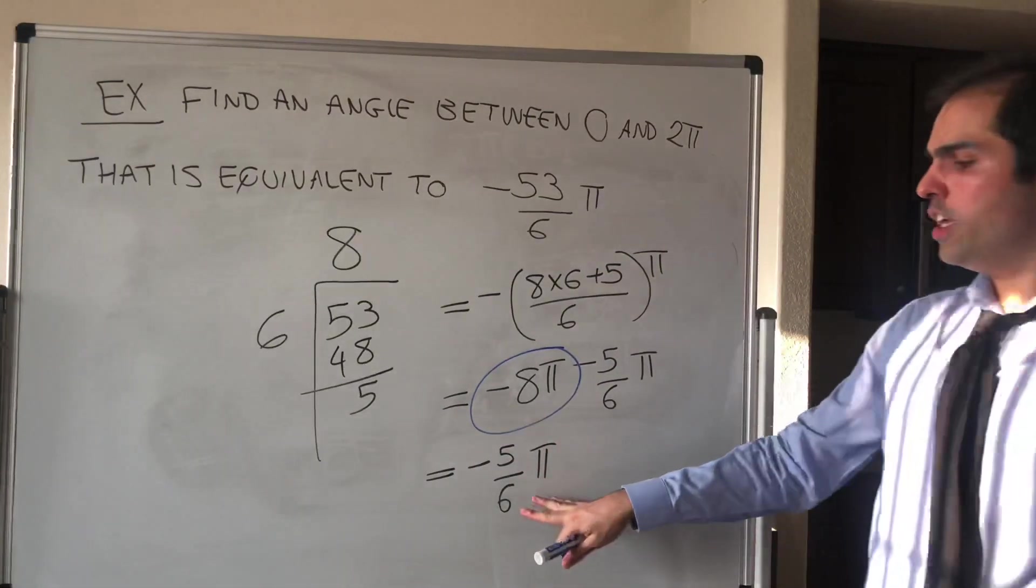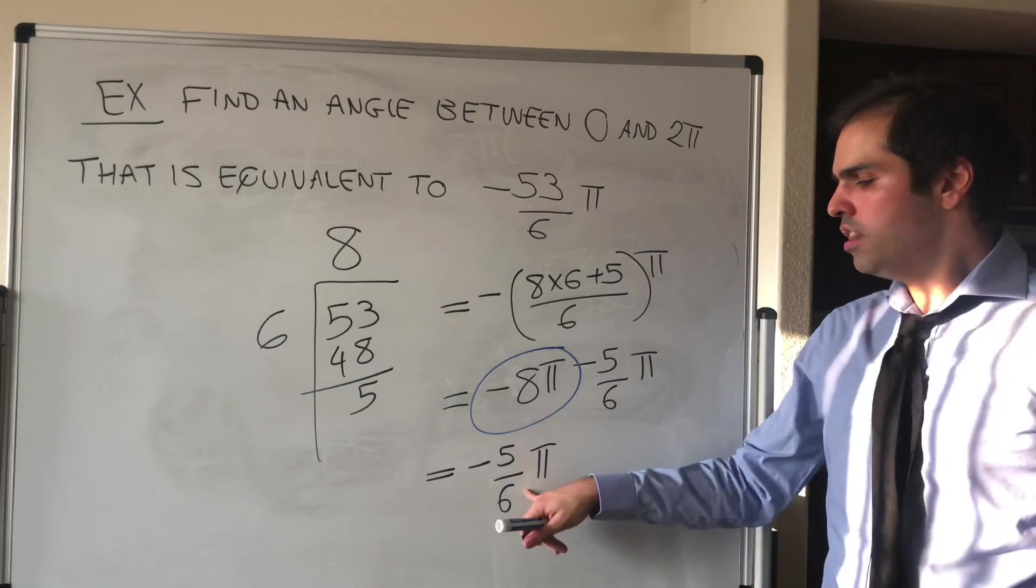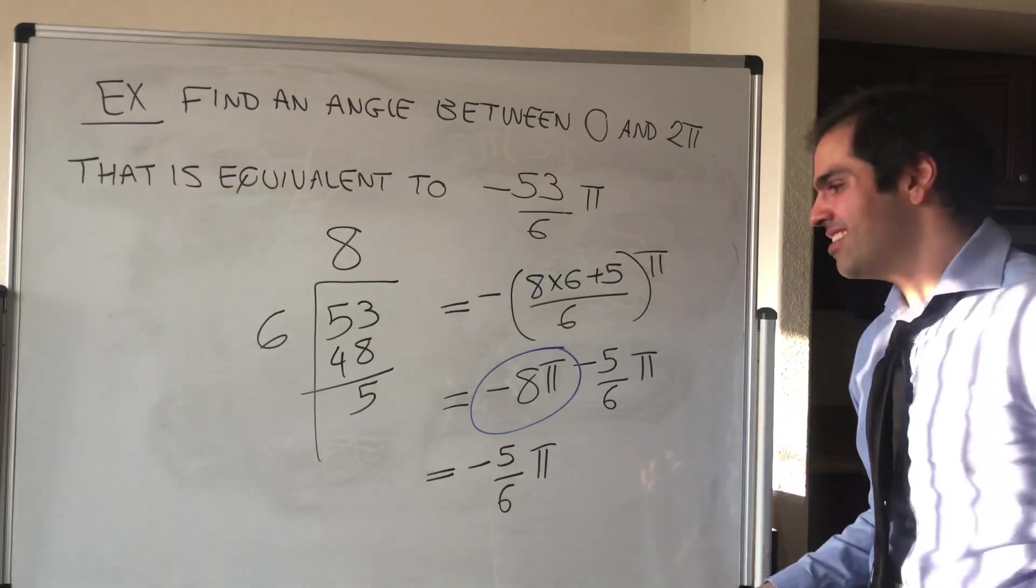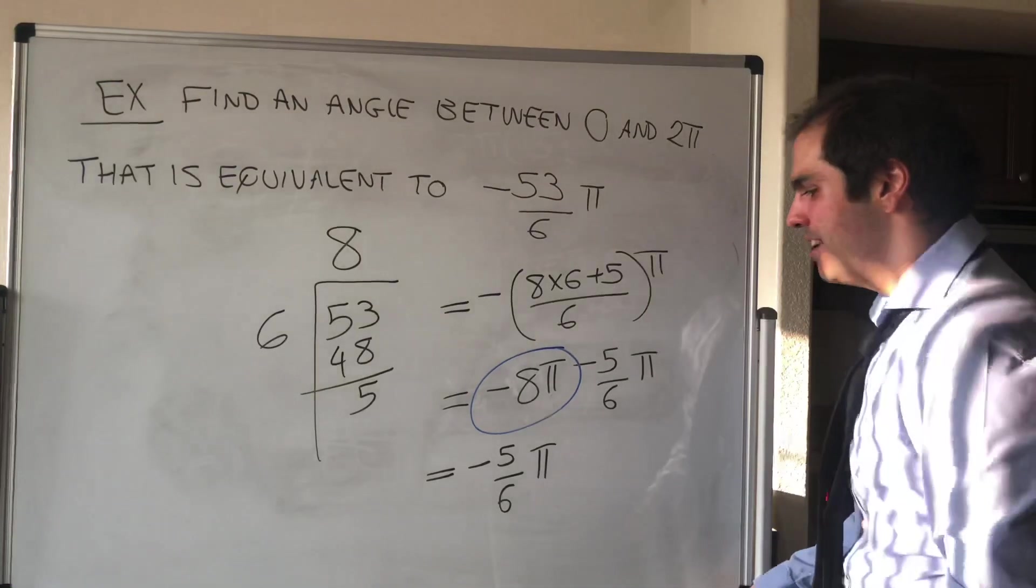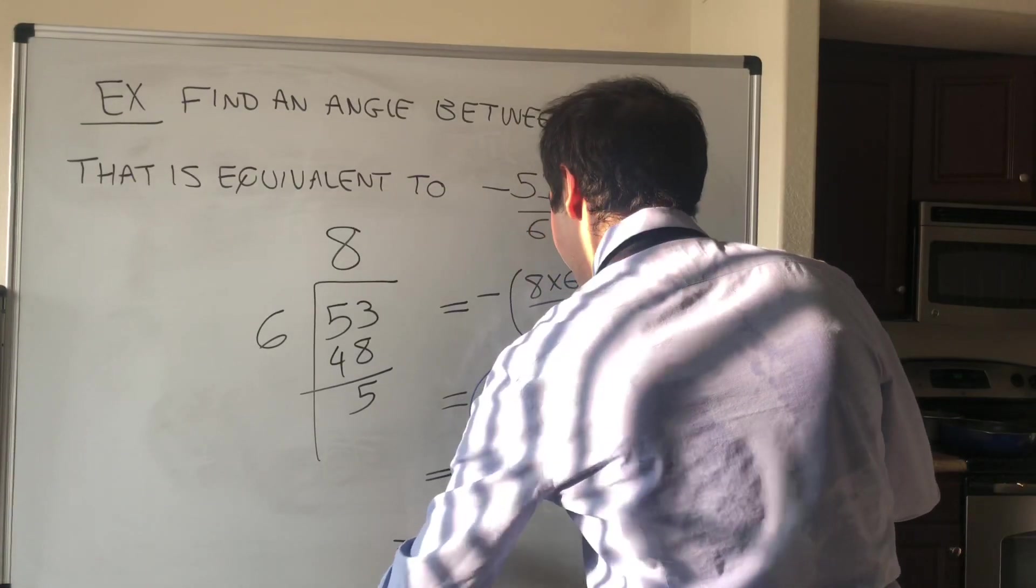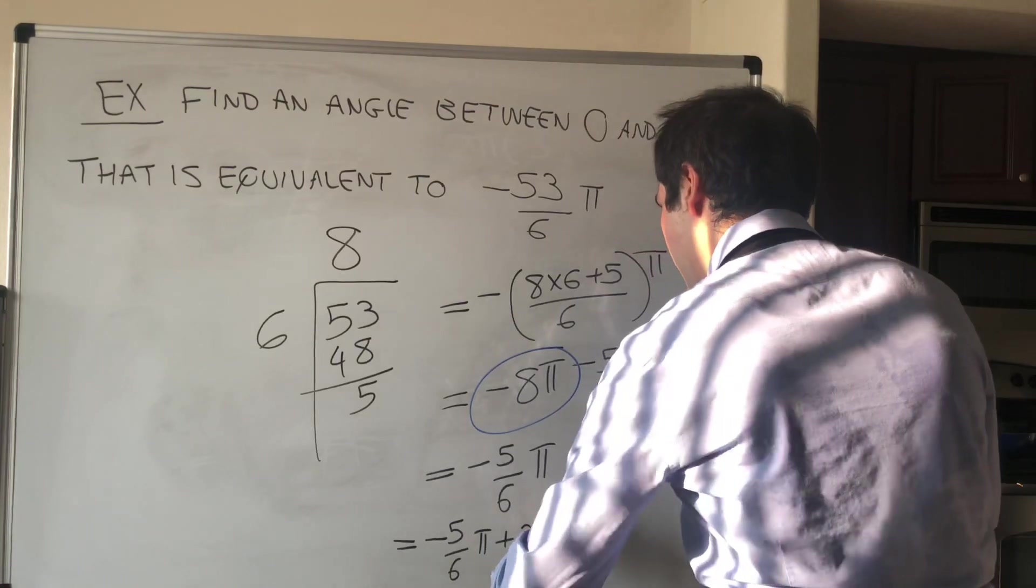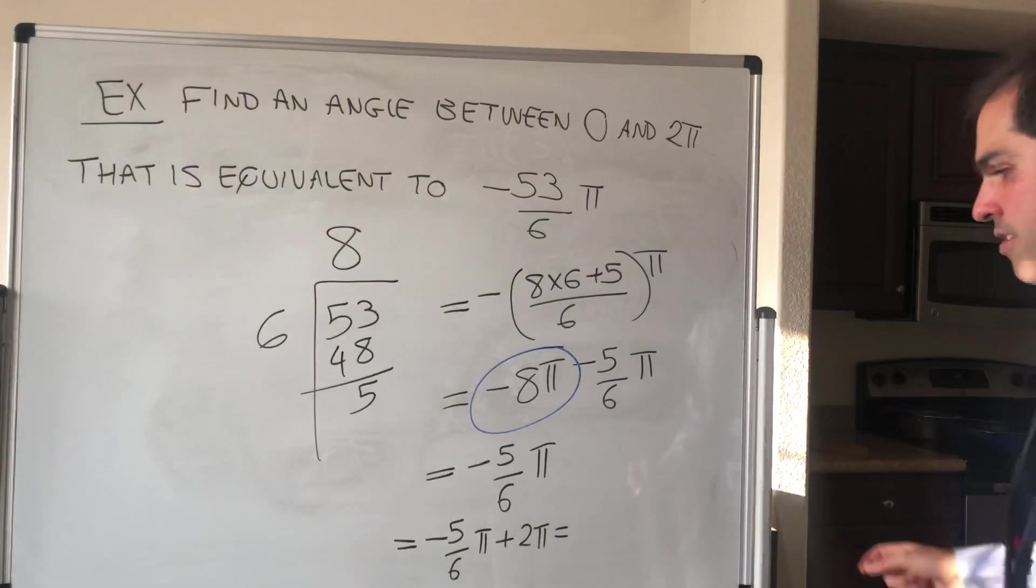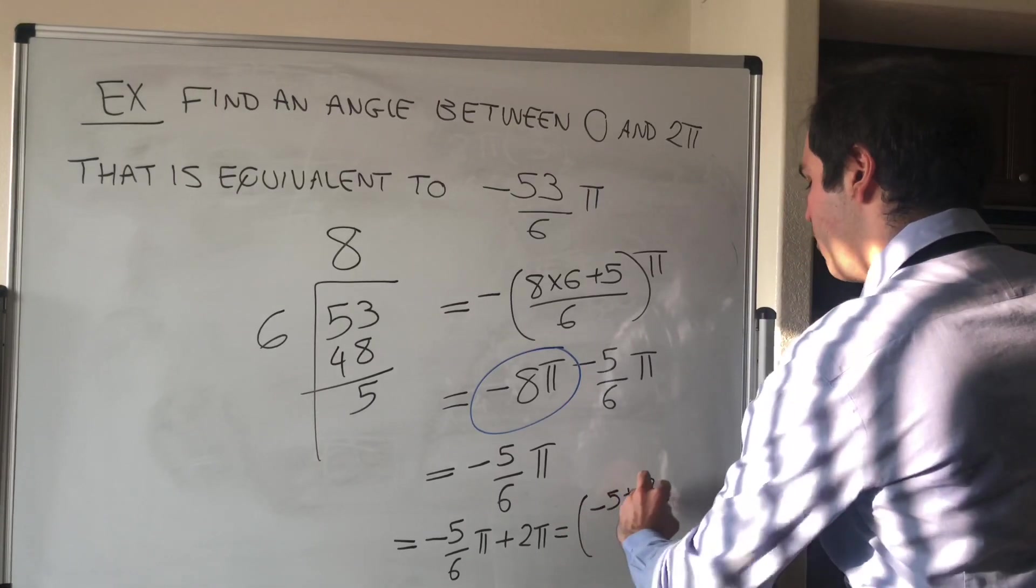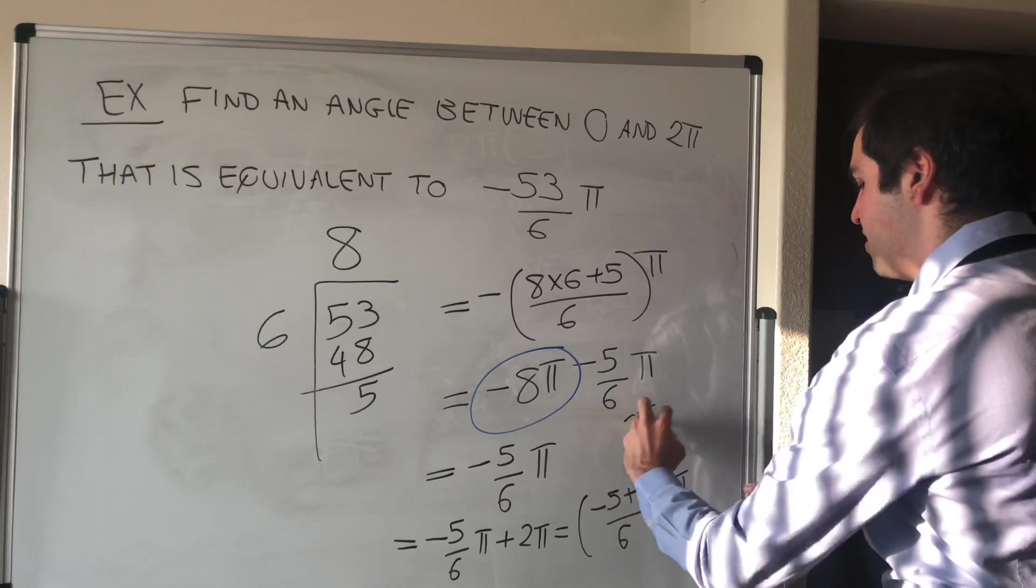Now the only issue is this is not between 0 and 2π. But in this case, just add 2π to it until you get something between 0 and 2π. So in the end you get this is -5π/6, and then plus 2π. And then you simplify this. So I believe this gives you (-5 + 12)/6 π. And that gives you 7π/6.